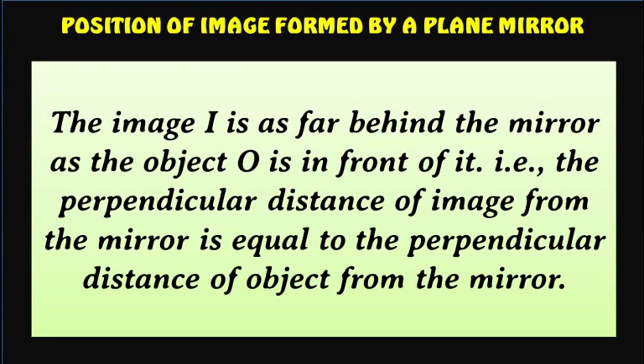Position of image: The image I is as far behind the mirror as the object O is in front of it. That is, the perpendicular distance of image from the mirror is equal to the perpendicular distance of object from the mirror.